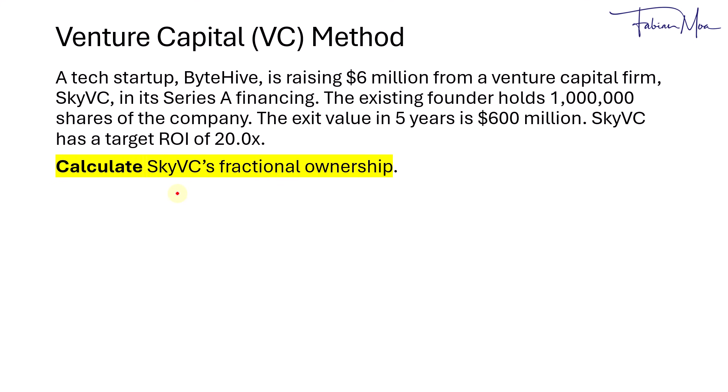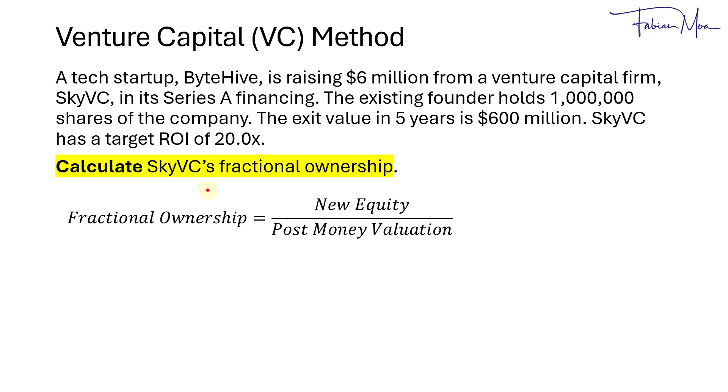Calculate SkyVC's fractional ownership — how much would SkyVC own in terms of their equity stake in the company? The fractional ownership is equal to the new equity investment divided by the post-money valuation. SkyVC would invest $6 million in a company worth $30 million post-money, which equals 20%. When SkyVC participates in the Series A financing, they would get a 20% stake in ByteHive.